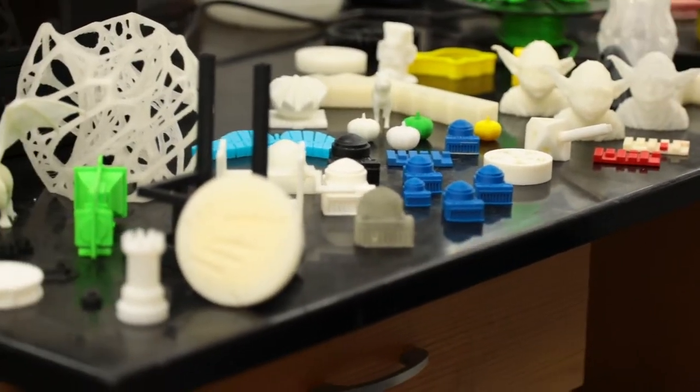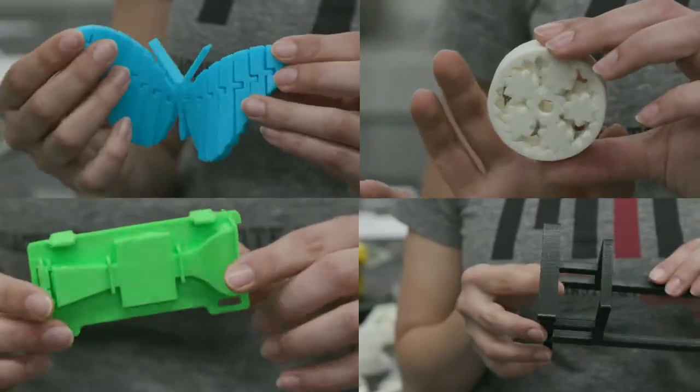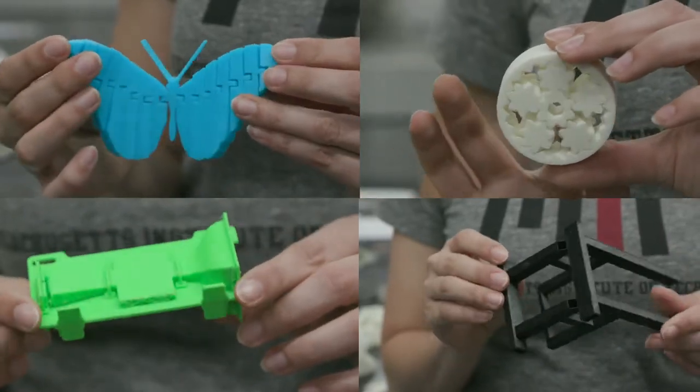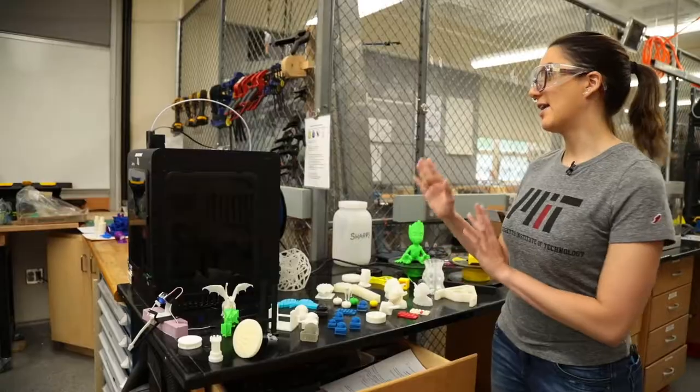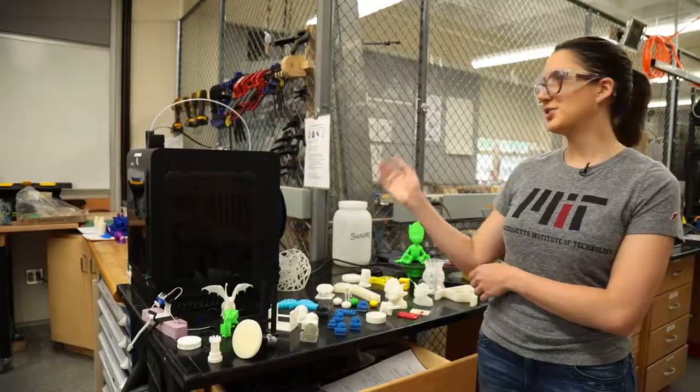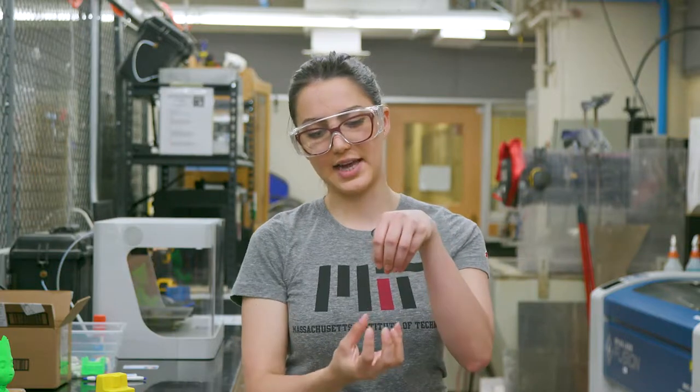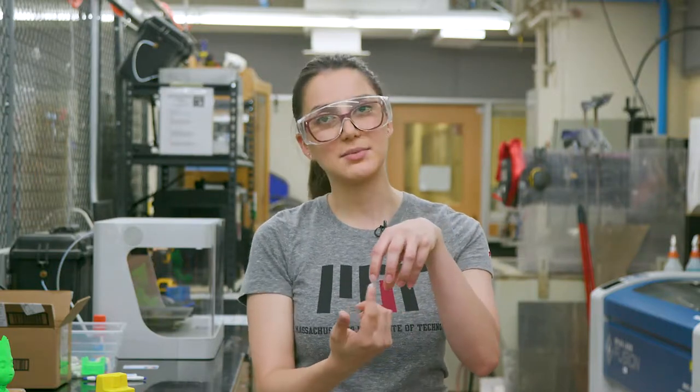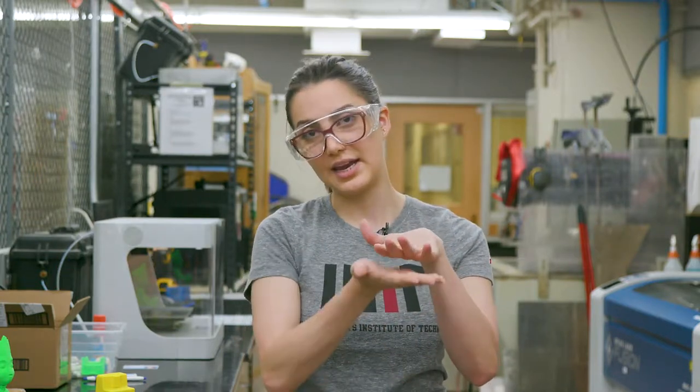These are some pieces that we can 3D print or produce with additive manufacturing, as it's also known. So here we are using an FDM 3D printer, which is fused deposition modeling. But there is also another type really common, which is SLA, stereolithography. The FDM puts the material on the top, and the SLA has a laser that cures the material in each layer.